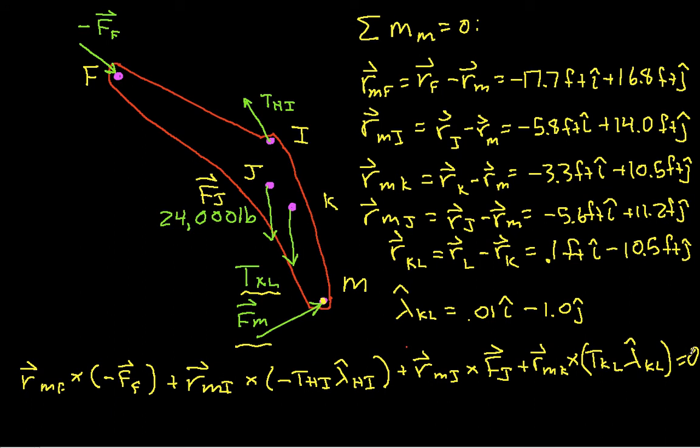Now again, the only thing that we don't know here, that we haven't already computed, is T-K-L. So we compute all of the cross products, and we get then that T-K-L is equal to minus 413,644 pounds.